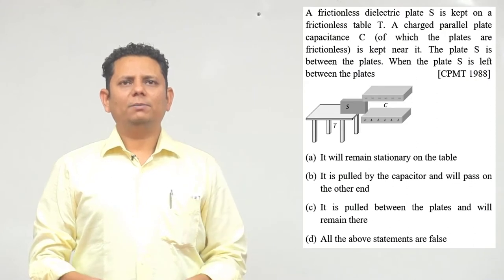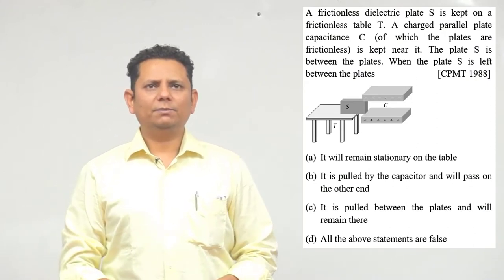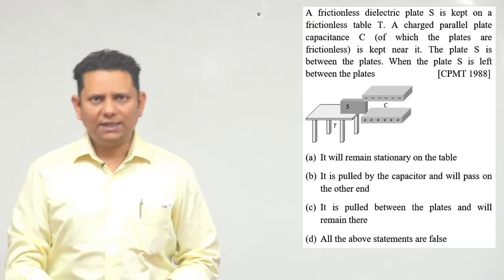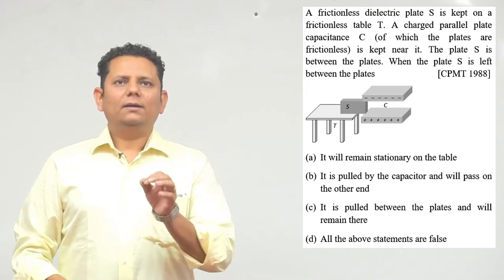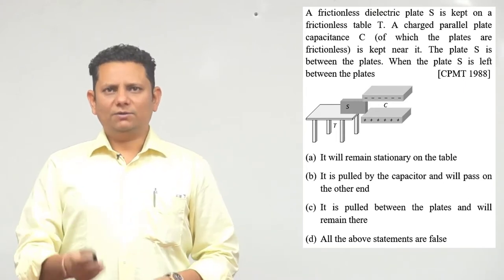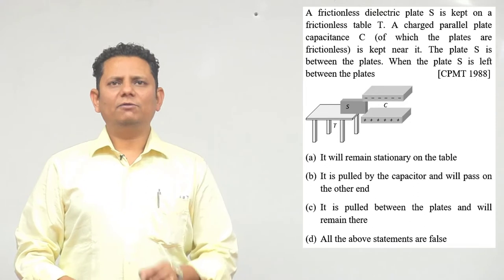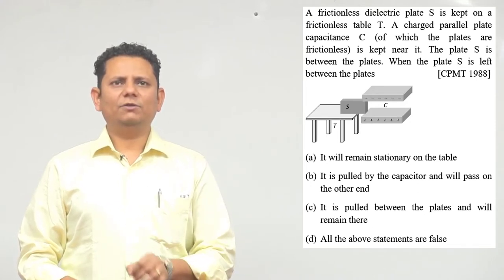A frictionless dielectric plate S is kept on a frictionless table T. A charged parallel plate capacitor C, of which the plates are frictionless, is kept near it. The plate S is between the plates. When the plate S is left between the plates...